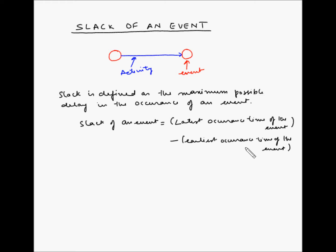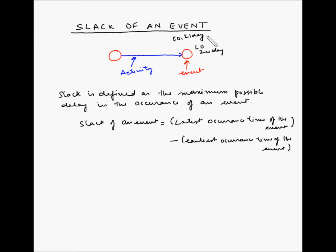Basically, slack of an event is the difference between the latest occurrence time and the earliest occurrence time of an event. For example, an event can happen as late as the 24th day and as early as the 21st day. So slack of this event is 24 minus 21, which is equal to 3 days.